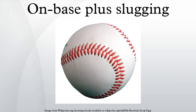On-base plus slugging is a sabermetric baseball statistic calculated as the sum of a player's on-base percentage and slugging average. The ability of a player both to get on-base and to hit for power — two important offensive skills — are represented. An OPS of .900 or higher in Major League Baseball puts the player in the upper echelon of hitters. Typically, the league leader in OPS will score near, and sometimes above, the 1.000 mark.